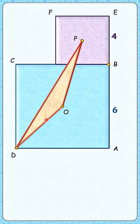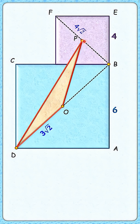Let's start by drawing the diagonals of both squares—that's DB and FB. We know that the diagonal of a square is √2 times the side length. So DB length will be 6√2, and DO will be half of it, or 3√2. The same way, FB length will be 4√2, and PB will be half of it, or 2√2.